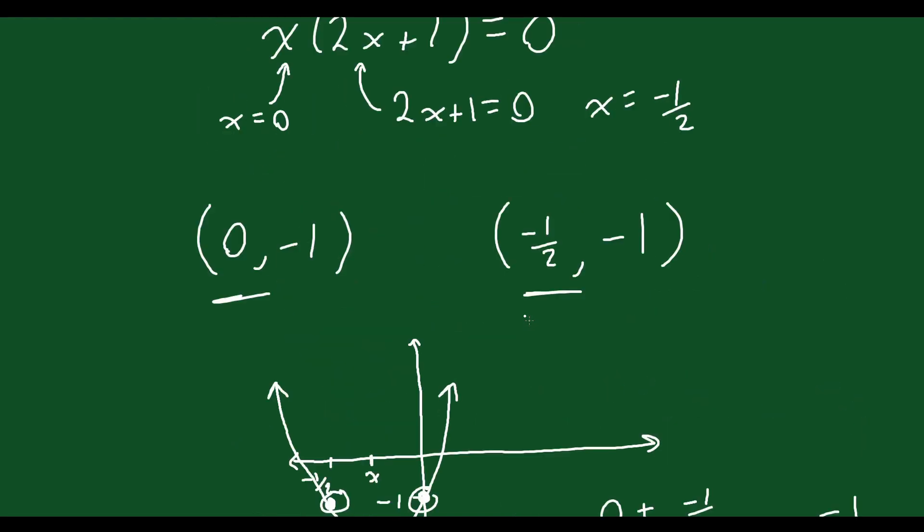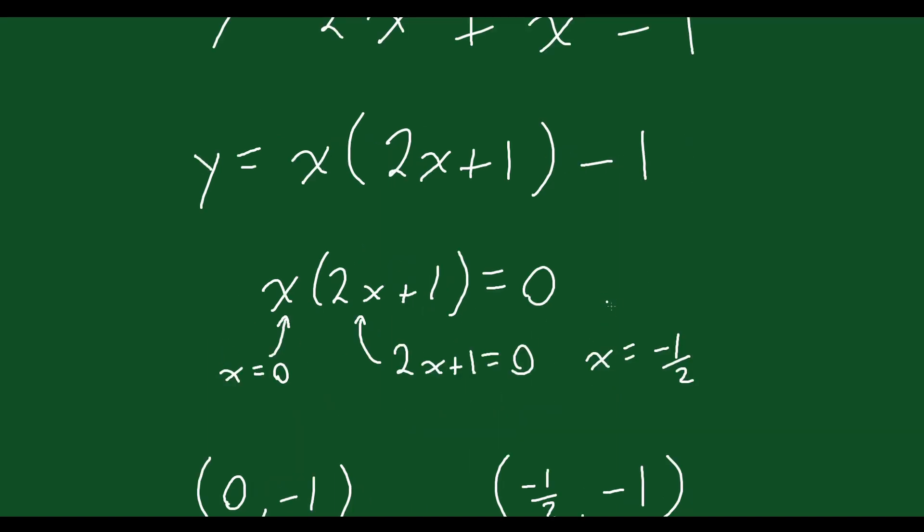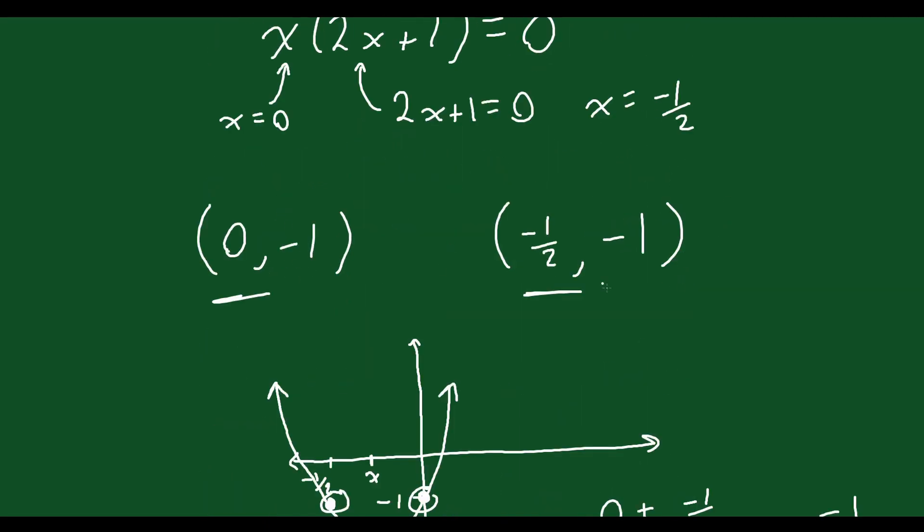So just to recap, all we did was we common-factored the first two terms. We determined what x values you would need to make that part of the equation equal 0. That's what we did here. You get two values for x, and we know the y value at those points because this just goes to 0, and you're left with the negative 1. So you have two points now.